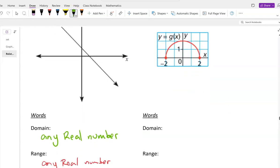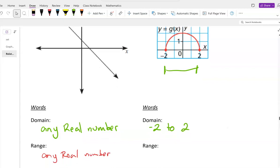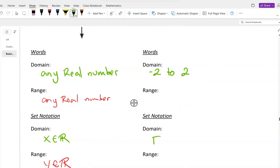Next one. Domain. From negative 2 to 2, that's what I want to say. Negative 2 to 2. How do I write that? I'm going to say negative 2 up to 2. Notice I'm including both negative 2 and 2.